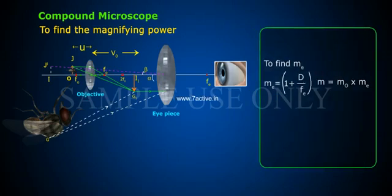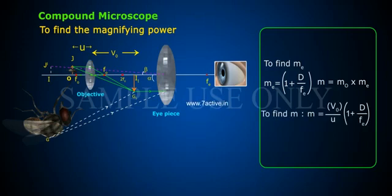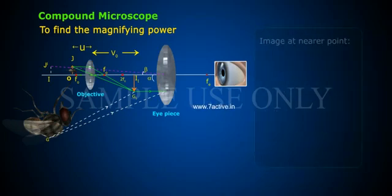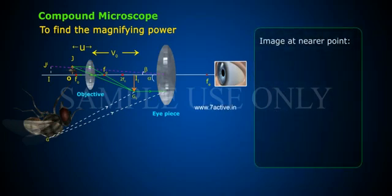To find Mₑ: Mₑ = 1 + D/Fₑ. M = M₀ × Mₑ. To find M: M = (V₀/U₀)(1 + D/Fₑ) when image is at near point.